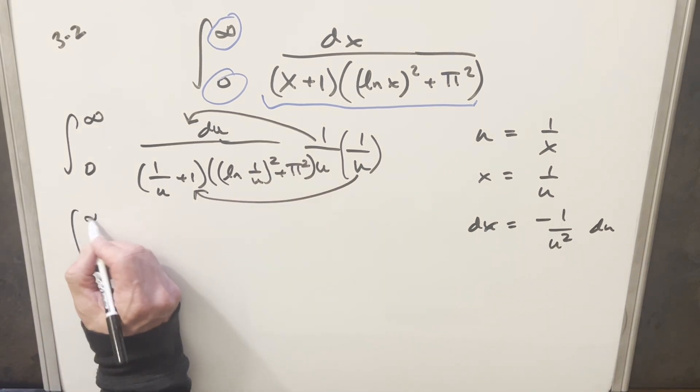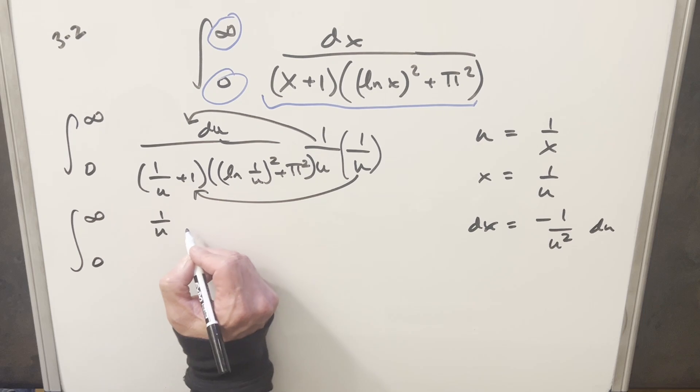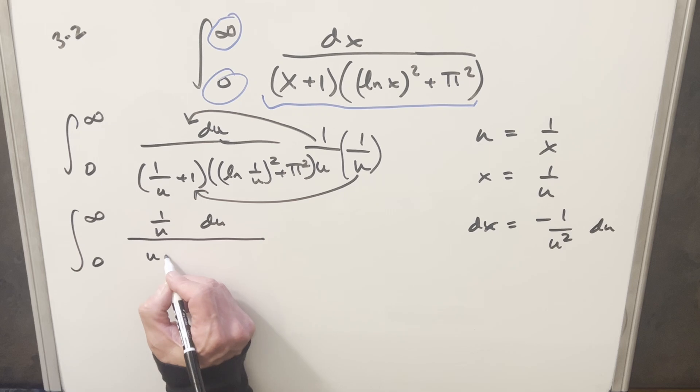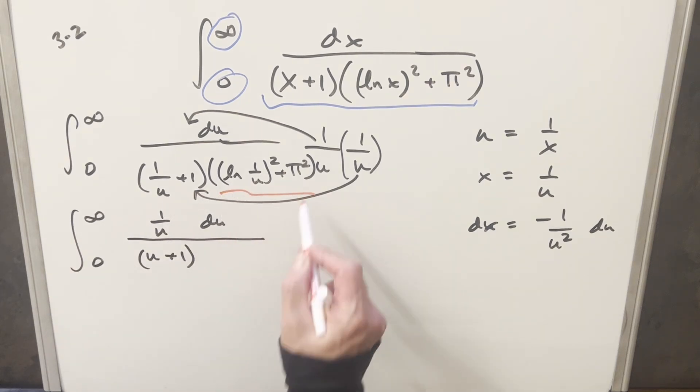And I'll take this copy and multiply it in right here. So when I do that, let's just rewrite. We're just going to have, we'll have our 1 over u in the numerator here. Multiplying this here, this is just going to become u plus 1. And then actually, before I rewrite all this, let's just focus on this natural log 1 over u.